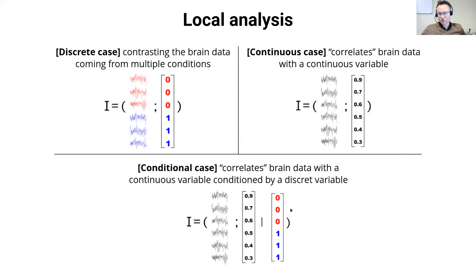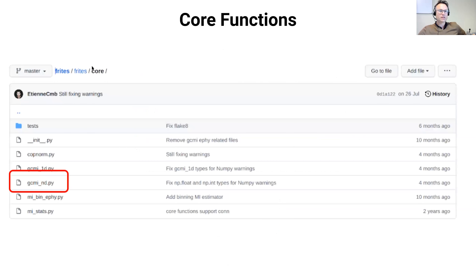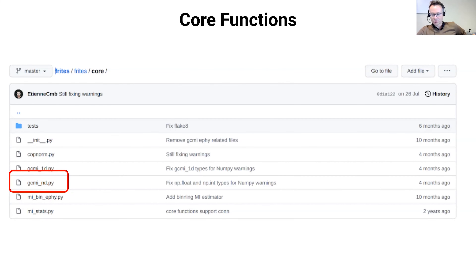It's also very practical because you can analyze both the relation between continuous signals, such as brain activity, and discrete variables, such as multiple conditions, or between continuous variables like brain activity and behavioral variables such as reaction times. This also applies in the conditional case, where you can analyze three variables, both continuous and discrete. If you look at the code, the core function is a single function called GCMI — Gaussian copula mutual information — for N dimensions, and it underlies all calculations performed in FIT.